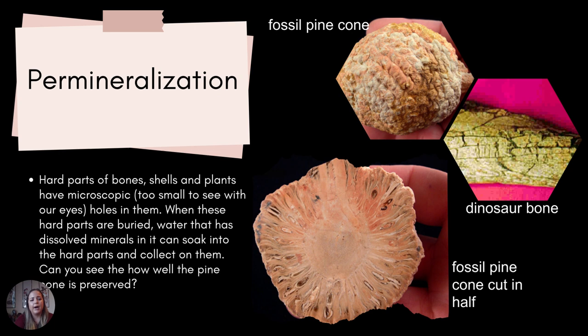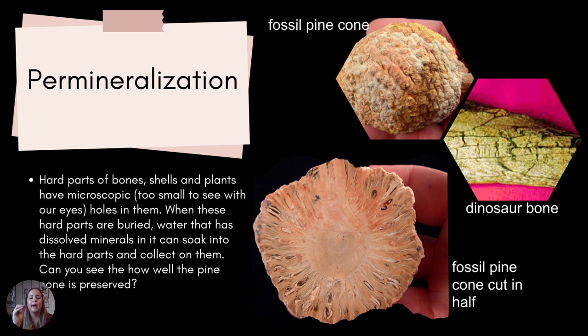With permineralization, the hard parts are replaced by some sort of material. We need pore spaces in the specimens — something like a pine cone or a bone that has pore spaces in it. That pore space can fill with water that has dissolved minerals in it, and those minerals can basically recrystallize, filling in those pore spaces and preserving the pine cone or bone. We're working with pore spaces where minerals in the water can flow through and crystallize within those pore spaces, preserving the sample.